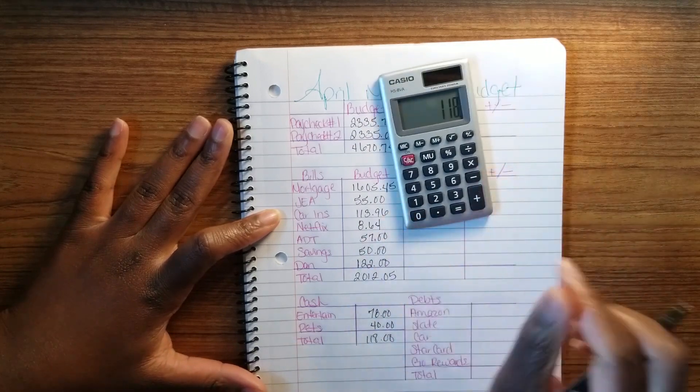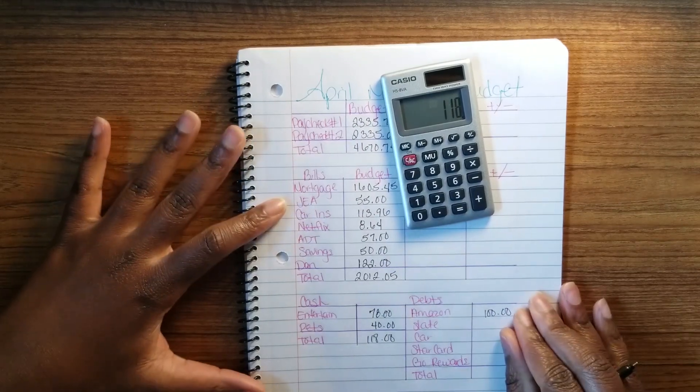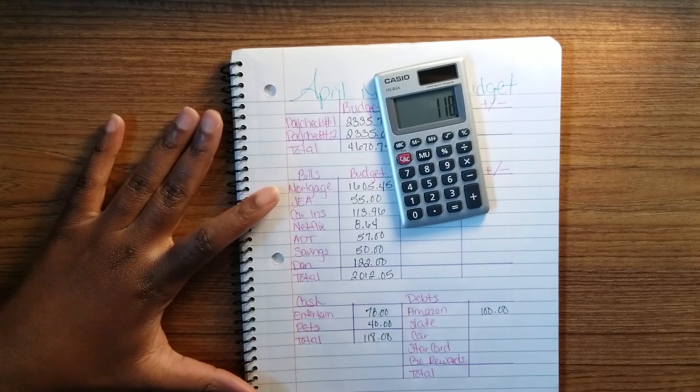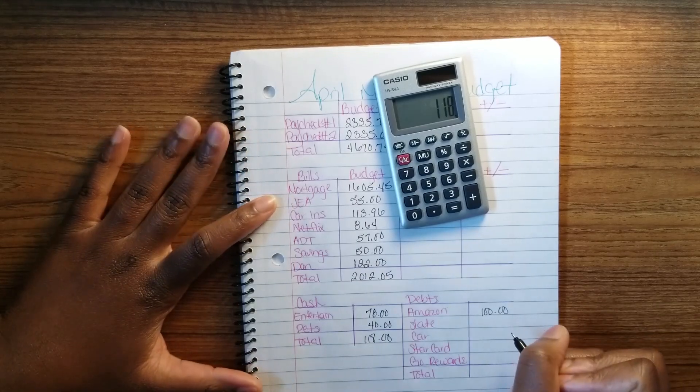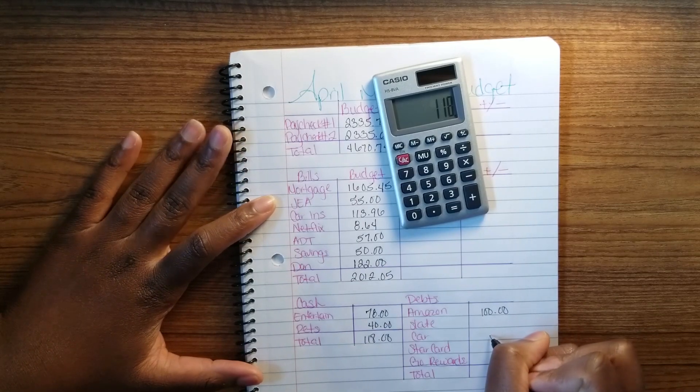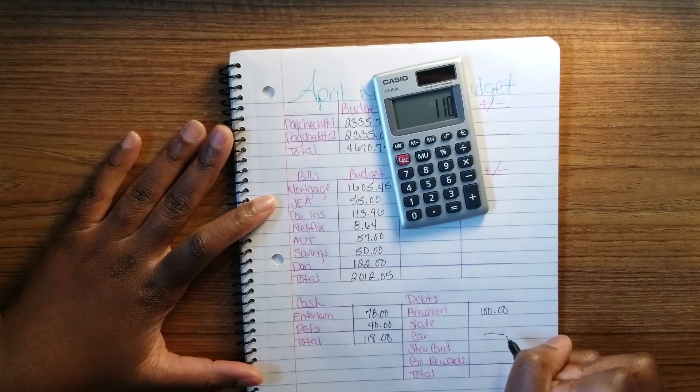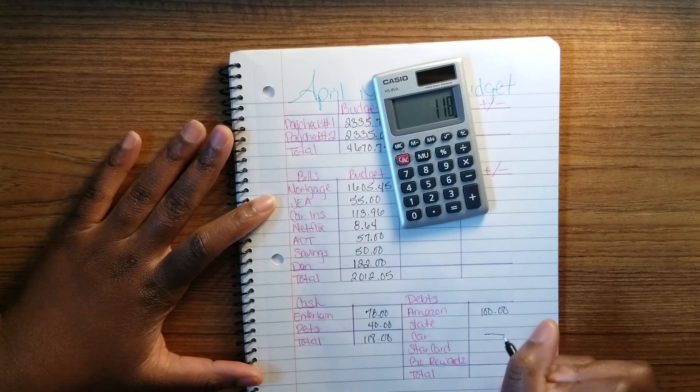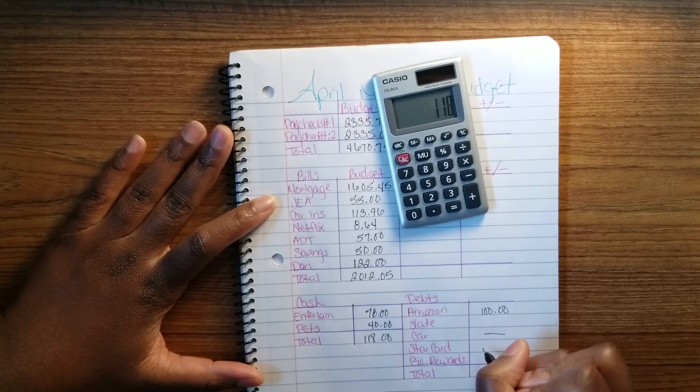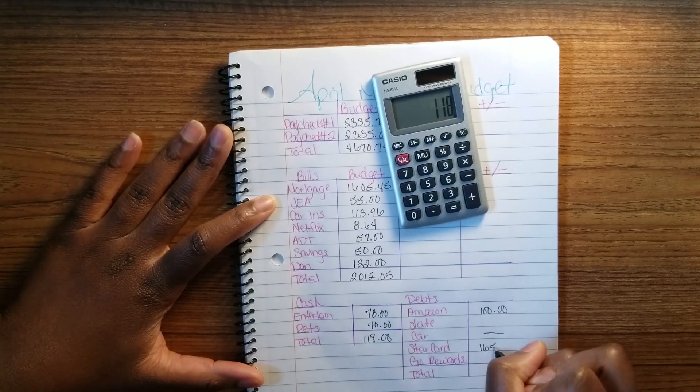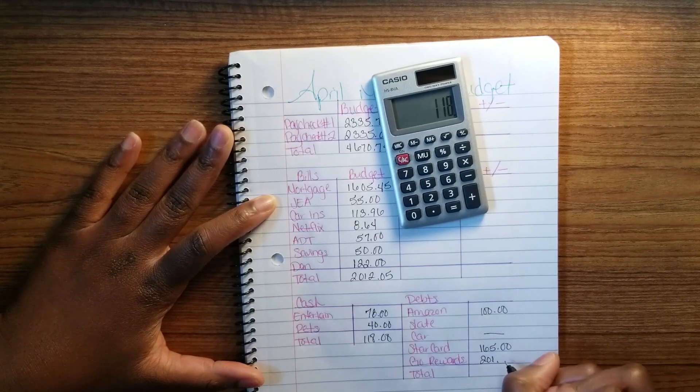Now onto my debts. Amazon, I normally just put $100 on Amazon. My car - at the moment I'm not paying it because I am 11 months ahead in my car note, so the money I would normally put on my car I'm just going to add it to another debt. I'll explain that later. My Star card is $165, and these are just minimum payments. My Gold awards is $201.